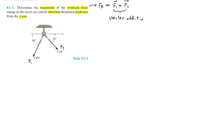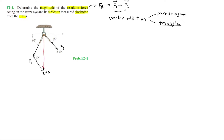Make sure to watch the video on vector addition if you haven't already. With vector addition we have two options: the parallelogram law and the triangle law. In this case I'll be using the triangle law, implemented on the diagram by adding the F2 force onto F1. Our resultant force FR will stretch from the screw eye all the way to the head of F2, forming our triangle.